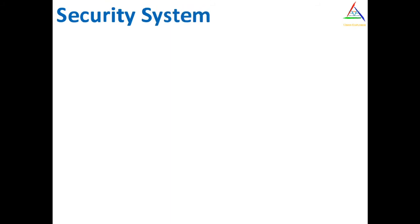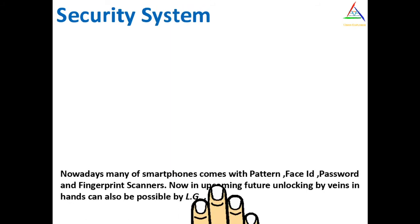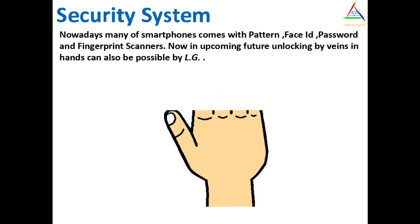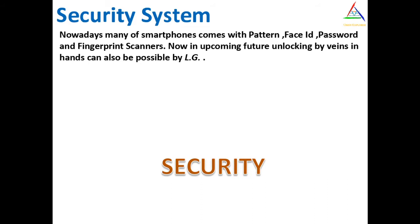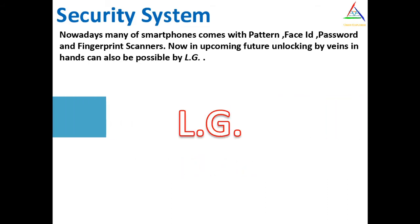In a smartphone, we have all used pattern or password lock. After that, companies came up with ideas like fingerprint, face, and retina scanner to add more security for the system. And now unlocking by veins in the hand can also be seen, which was introduced by LG.